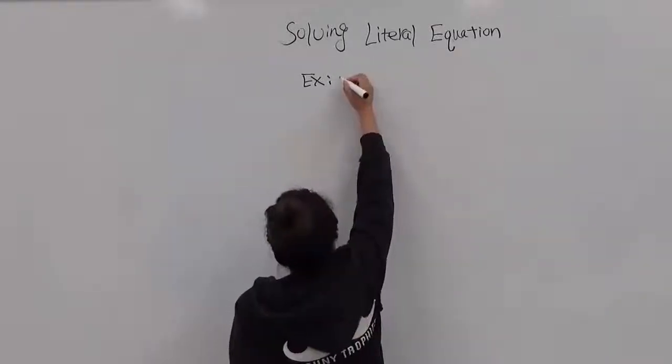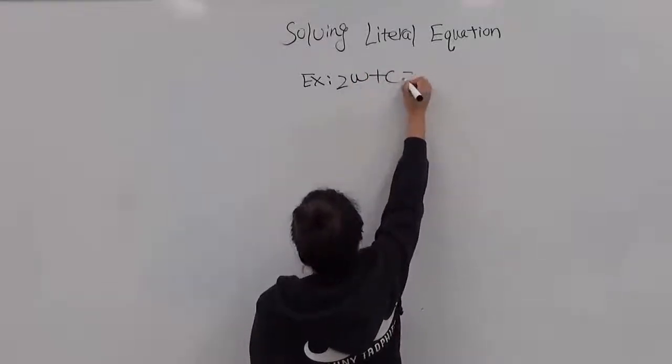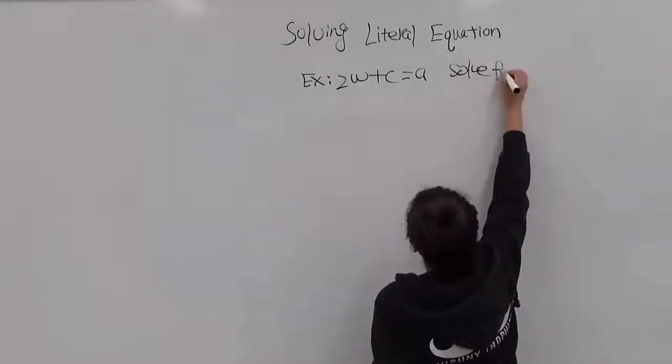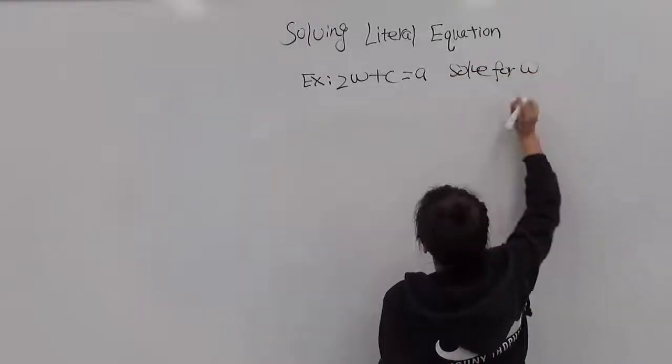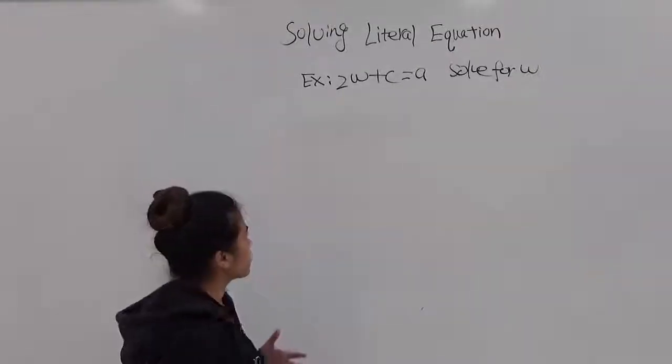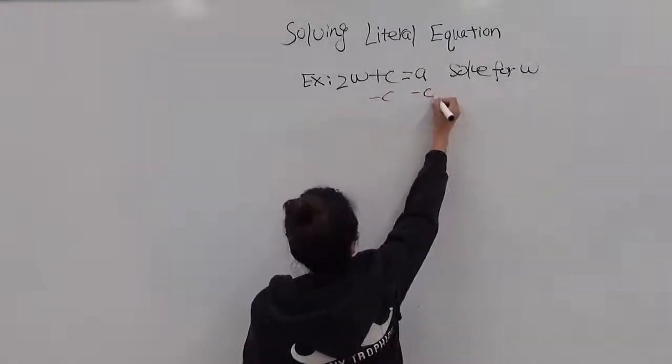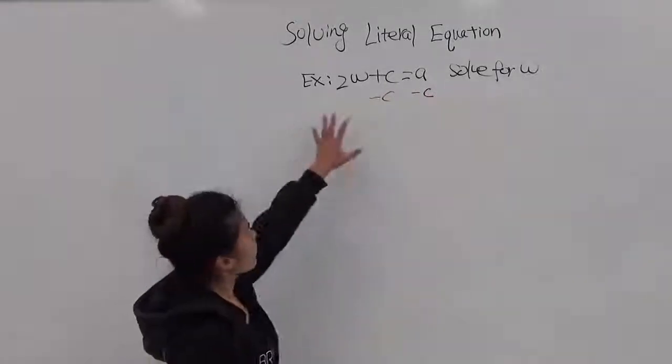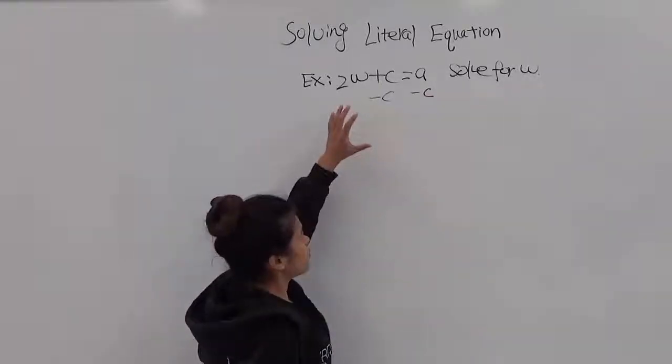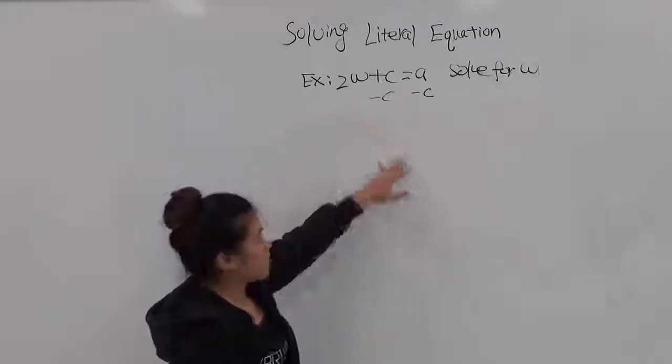For example, 2w plus c equals a. Then the question asks you to solve for w. So first we're going to subtract c on both sides because you want to isolate w. In order to isolate w, you need to do inverse operations. So you want to subtract c on both sides.